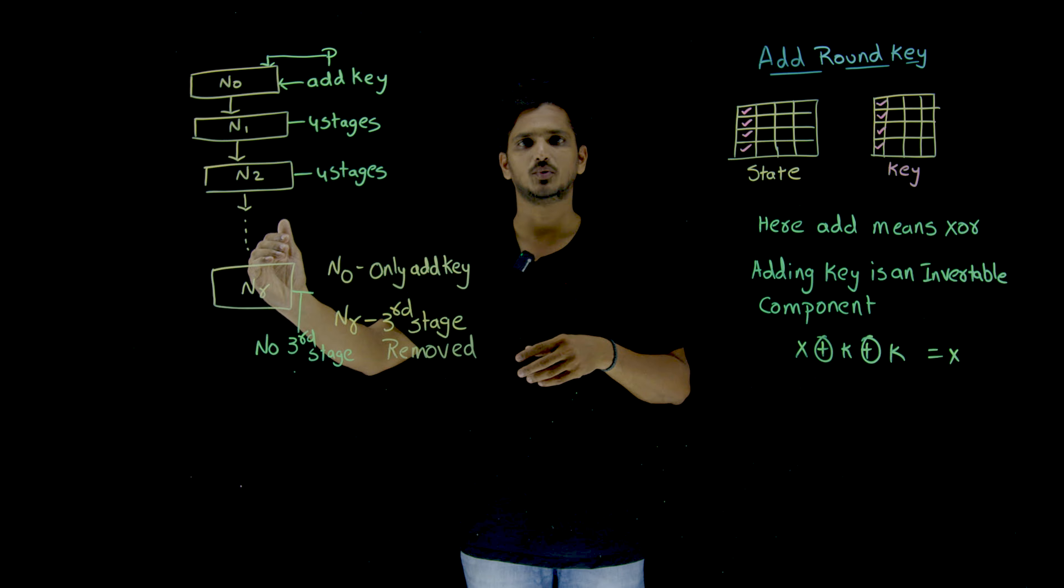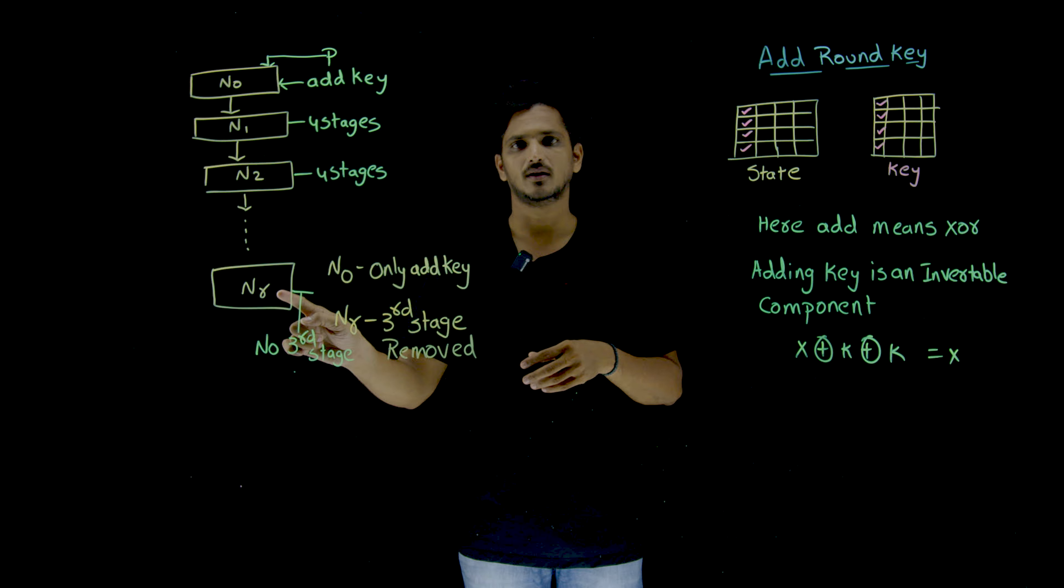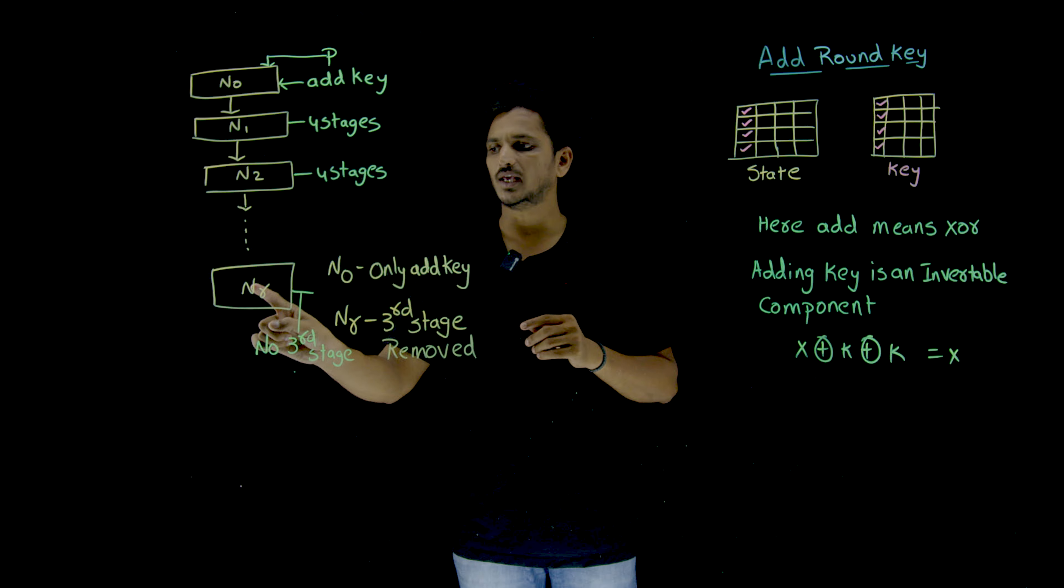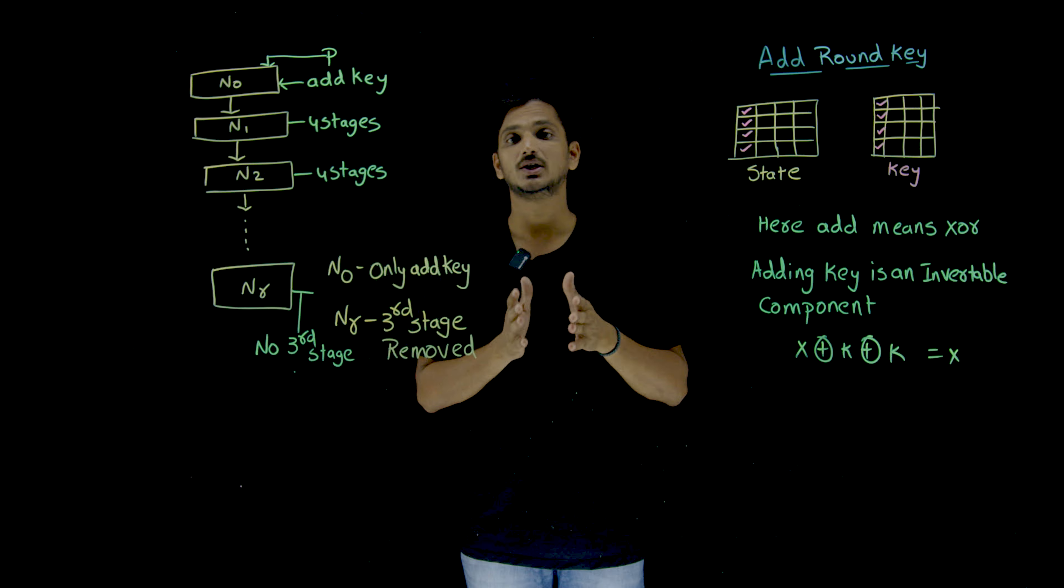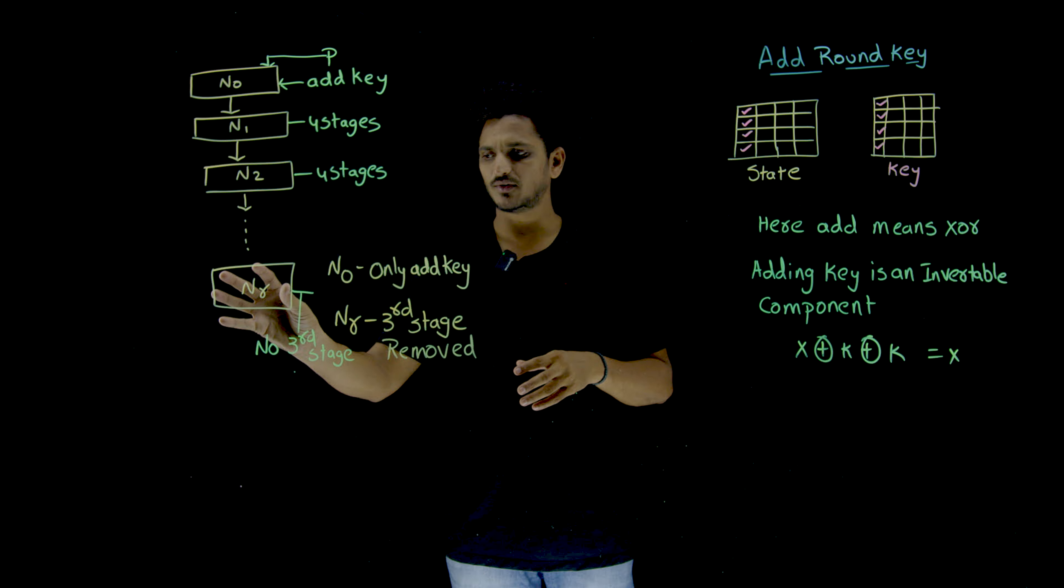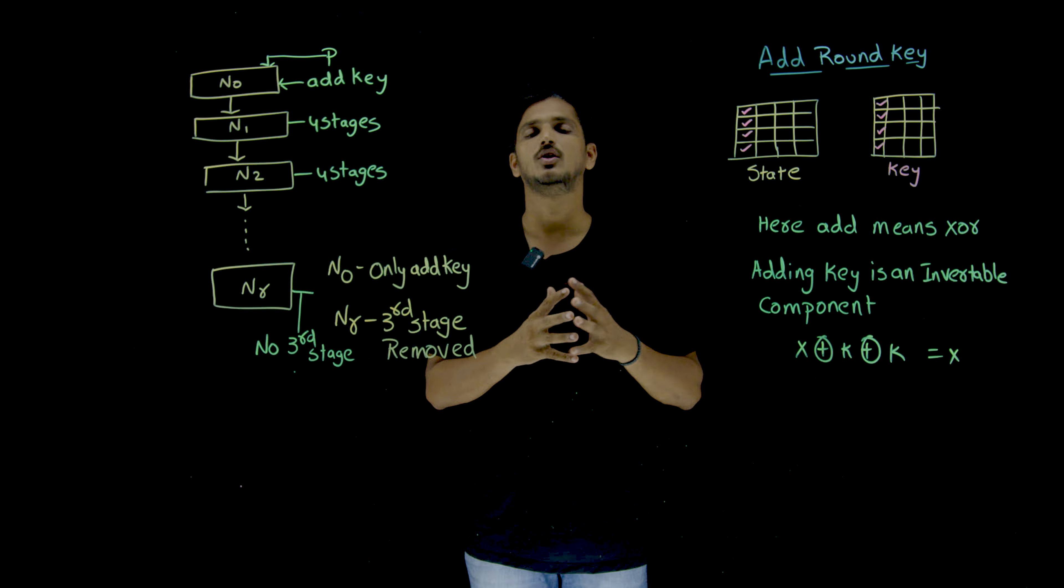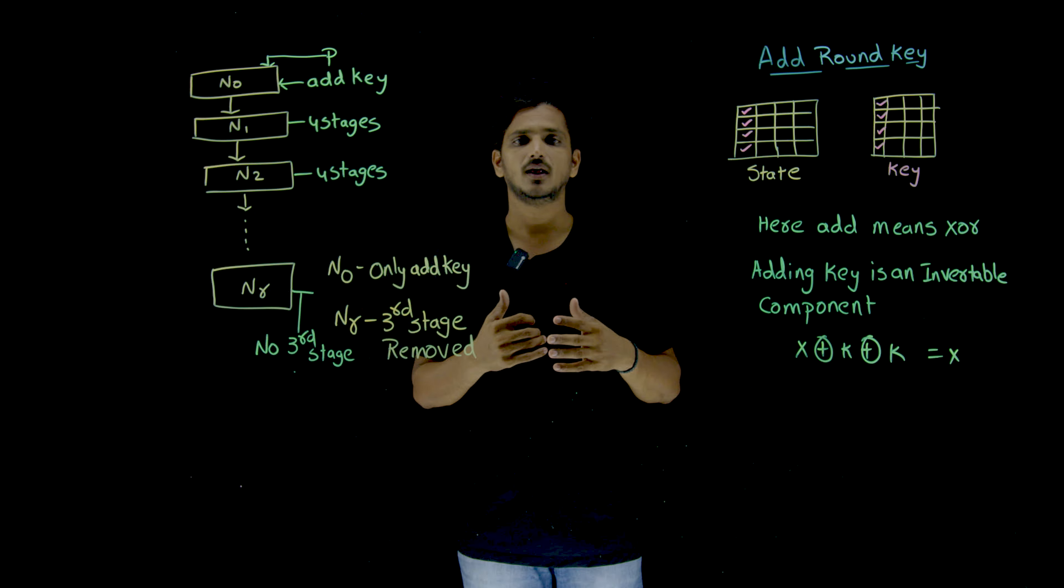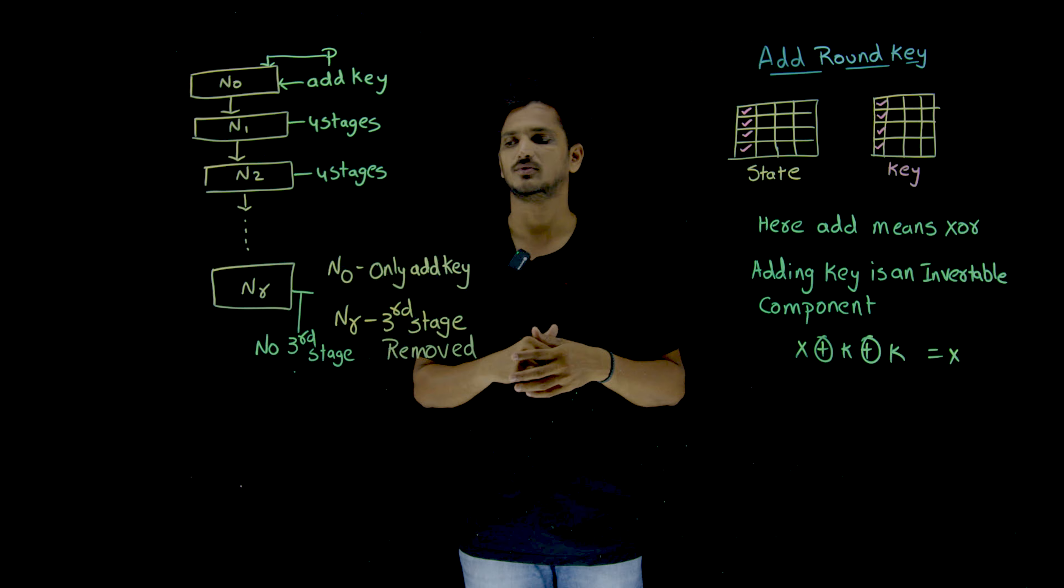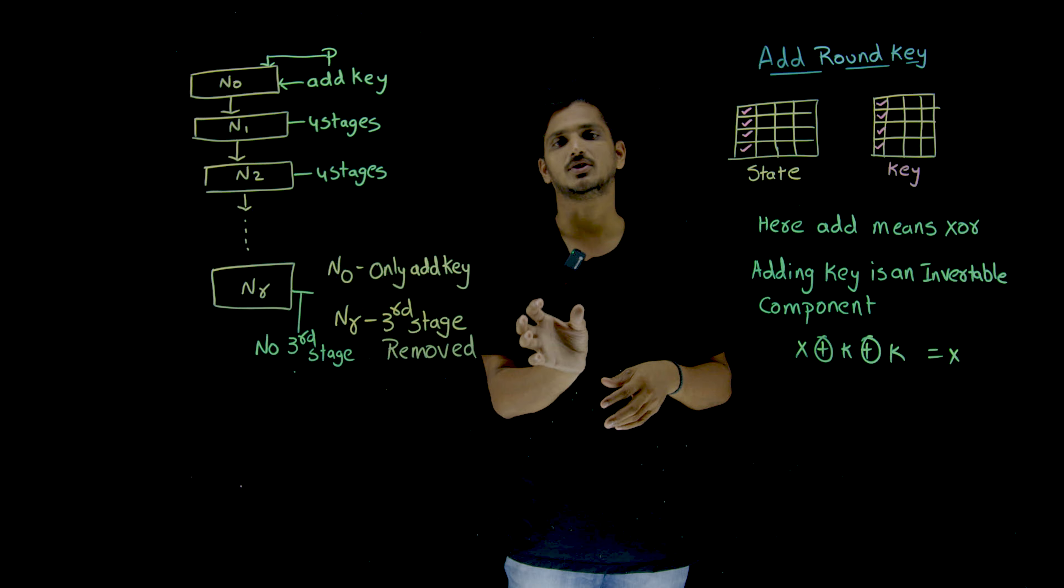N1, N2, so on up to, if it is 128 bit key, it will go to the last round, that is N10. But one thing you need to understand here, N10 in the last round, the third stage is removed. Mixing bits is removed. Mixing columns is removed. So similarly, when it moves to the decryption side, in the first round, mixing columns will not be there. Because all the components which we discussed in AES are invertible components. If mixing columns is removed here, the same thing happens in the decryption first round also.